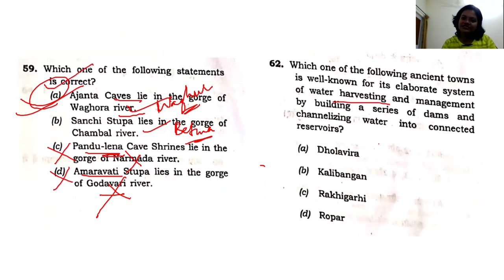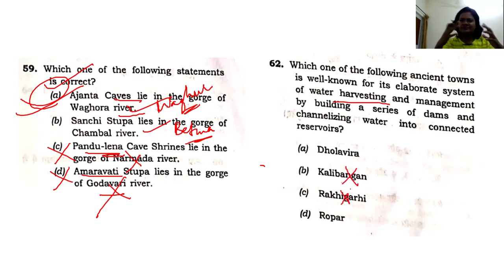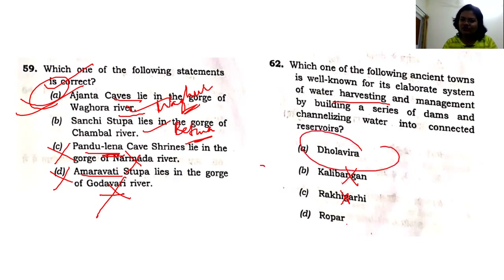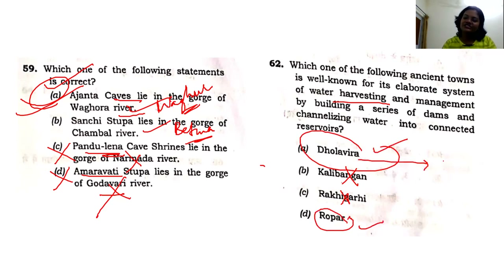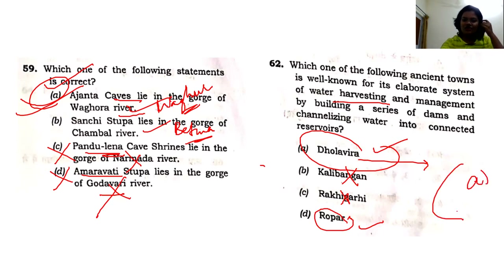The next question is about water harvesting structures. For water to be harvested and reservoirs constructed, you need a good water source. Kalibangan and Rakhigarhi are not drained by major river systems, so they can't be the answer. The answer should be Dholavira or Ropar in the Punjab or Gujarat region. Significant reservoir systems have been mentioned specifically at Dholavira. So the answer is option A.